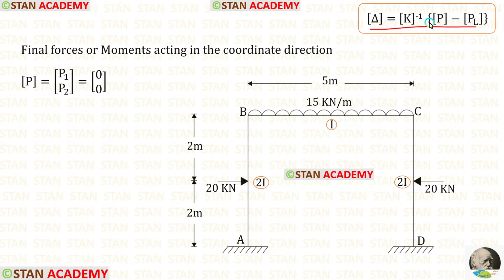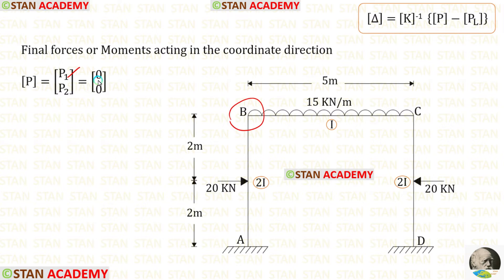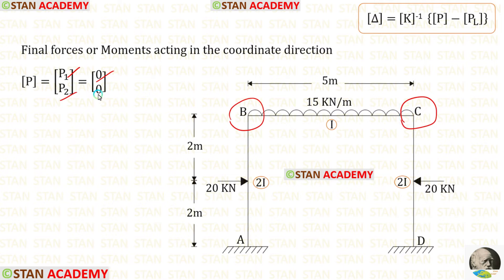Now let us find the P matrix. Let us find P1. Our first coordinate is at point B. At point B, there is no external moment applied, so P1 will be 0. Let us find P2. Our second coordinate is at point C. At point C also there is no external moment, so P2 will also be 0.